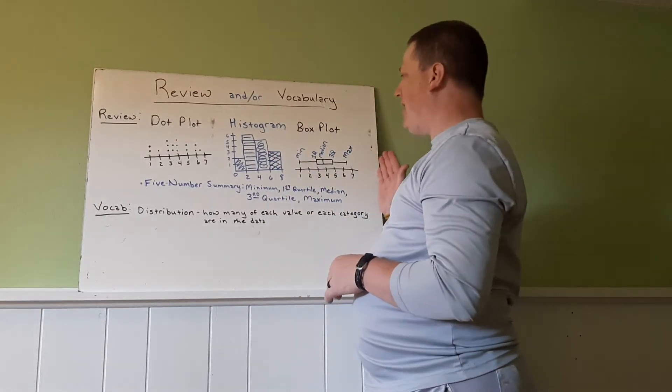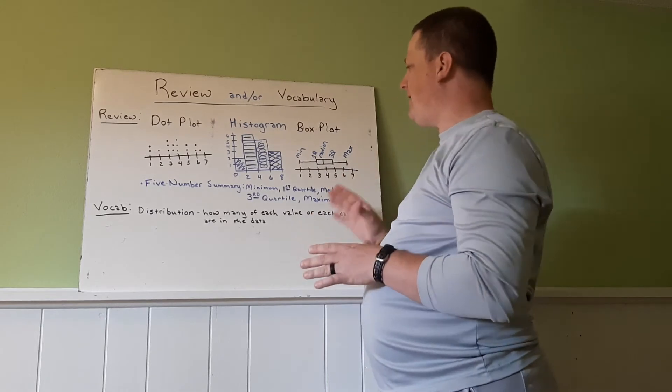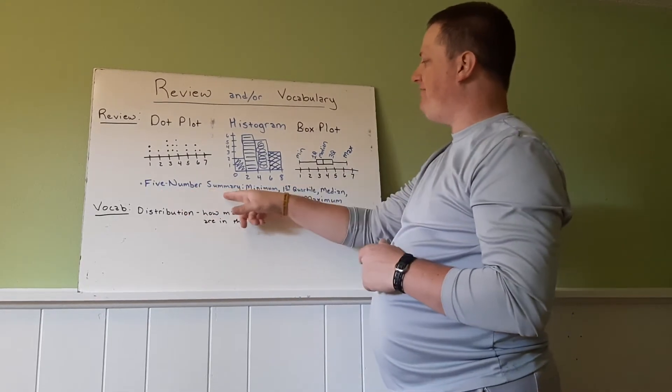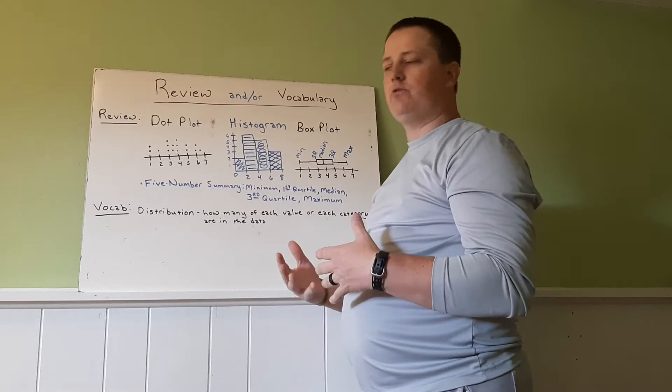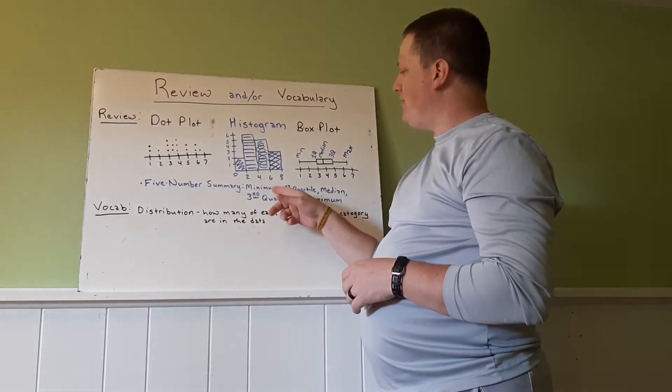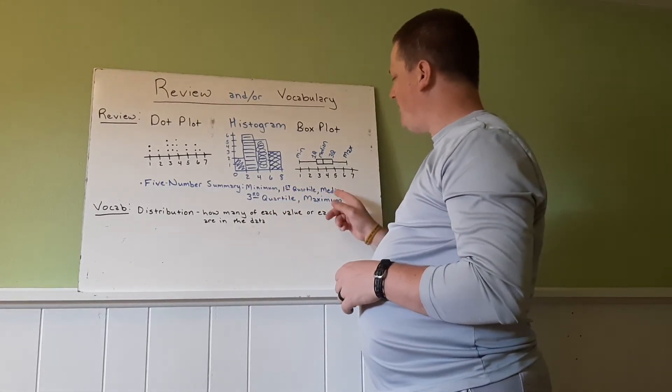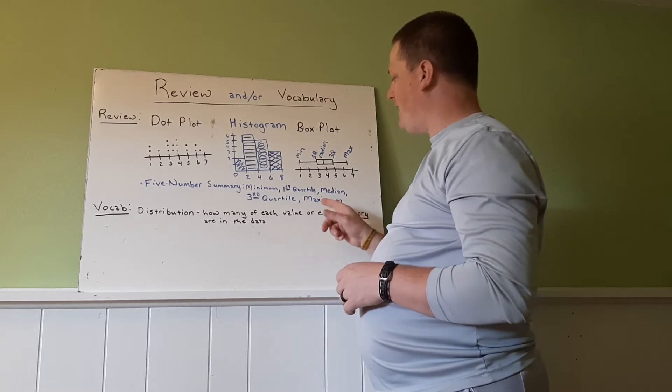And then we have our box plot. Again, same data. Our box plot is made up of the five number summary that you learned when you were younger, which is the minimum, the first quartile, the median, the third quartile, and the maximum.